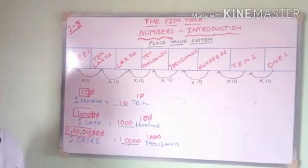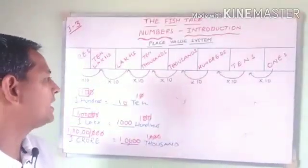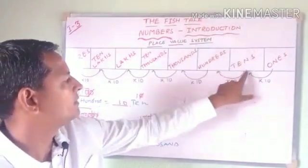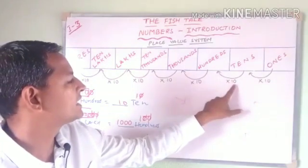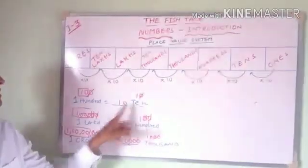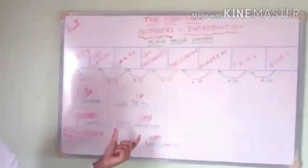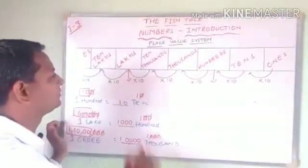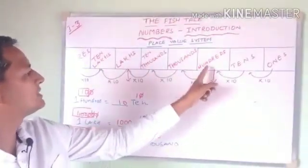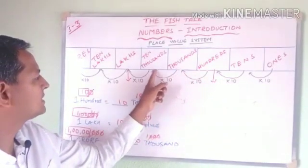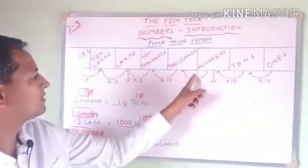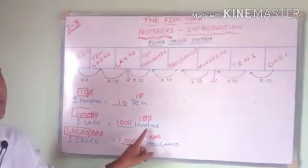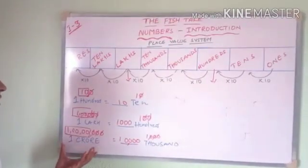There is also a different method using the place value chart. For example, 10 is here and 100 is here — from 10s to 100 it increases 10 times, so only 10 tens make 100. If you want to know how many hundreds make 1 lakh: from 100s to lakhs there are three jumps, each increasing 10 times. So 10 into 10 is 100, and 100 into 10 is 1000. Therefore 1 lakh is made up of 1000 hundreds.